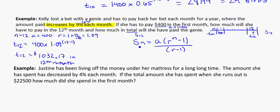So plugging in what we know, we're looking for the sum up to 12 months. So N is equal to 12. A is the same, it's 400 in her first payment, times her R value, which is 1.09, to the power of 12 minus 1. Bracket, and all of that is over 1.09 minus 1 with a bracket.